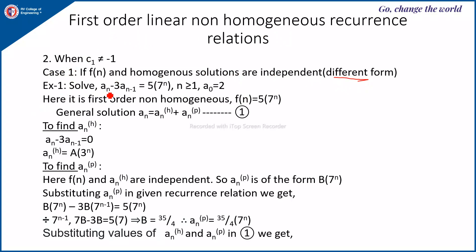Suppose the question is: solve a(n) - 3·a(n-1) = 5·7^n, where n ≥ 1 and a(0) = 2. Here it is a first order non-homogeneous recurrence with f(n) = 5·7^n. We know it is non-homogeneous and c1 is not equal to minus 1, so it belongs to the second case. Therefore, the general solution is the sum of the homogeneous solution and a particular solution.